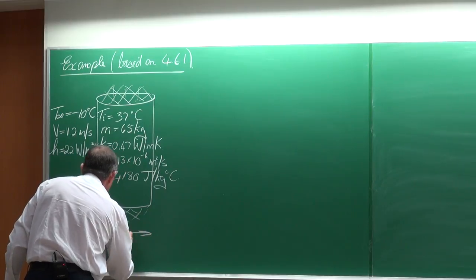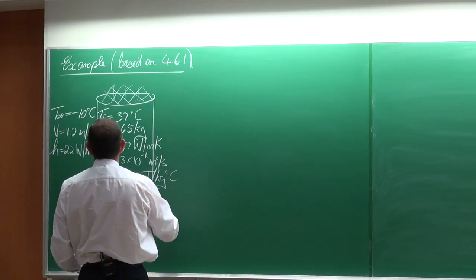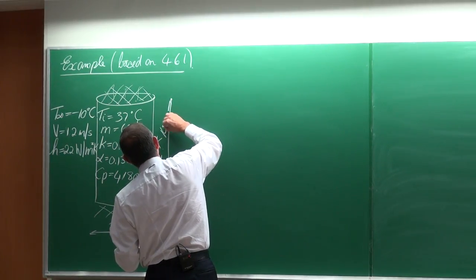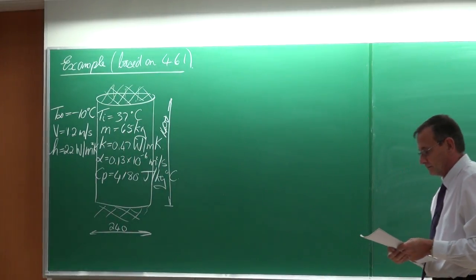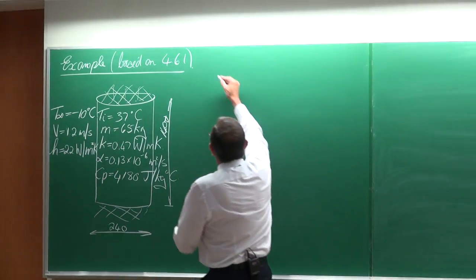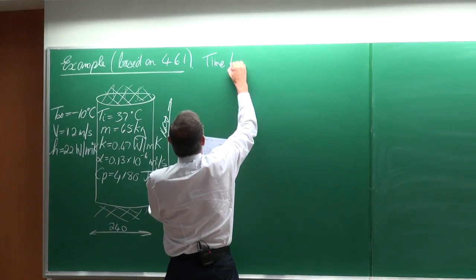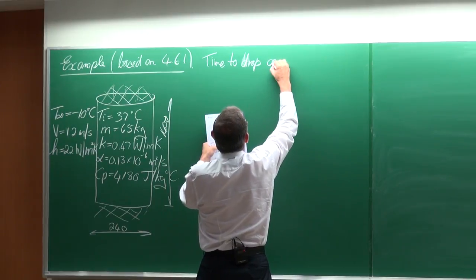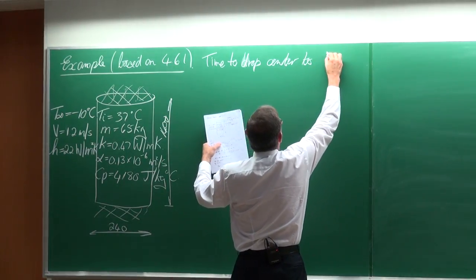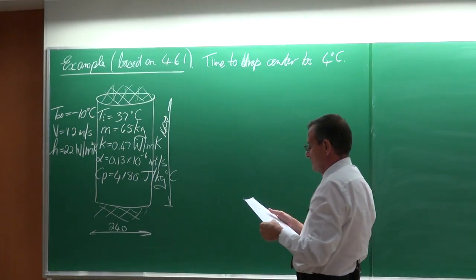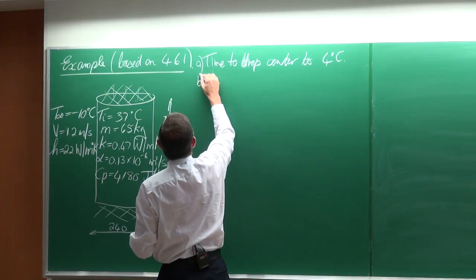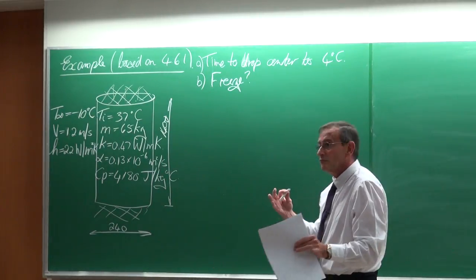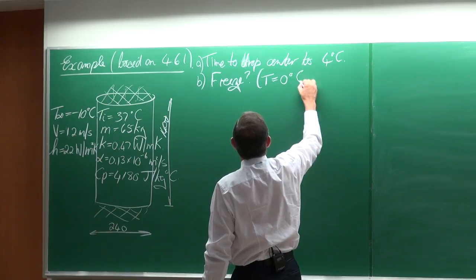The cylinder has diameter 240 mm and height 1400 mm (1.4 m). We need to determine the time to drop the center temperature to 4°C, and check whether freezing occurs — meaning the temperature anywhere in the carcass reaching 0°C.